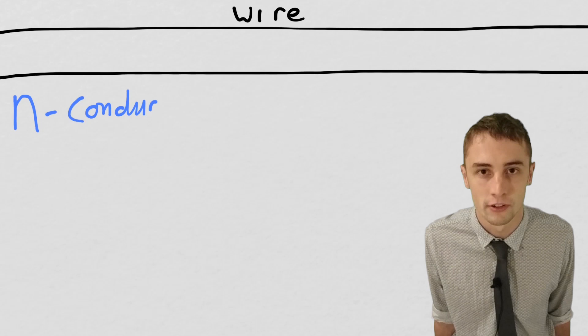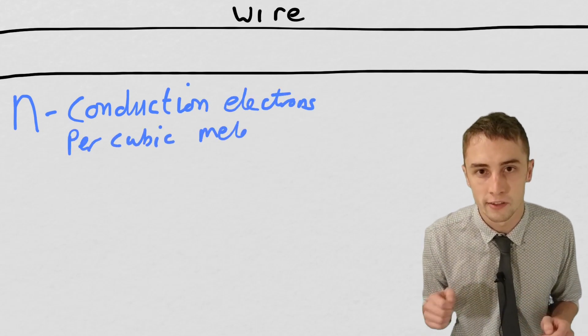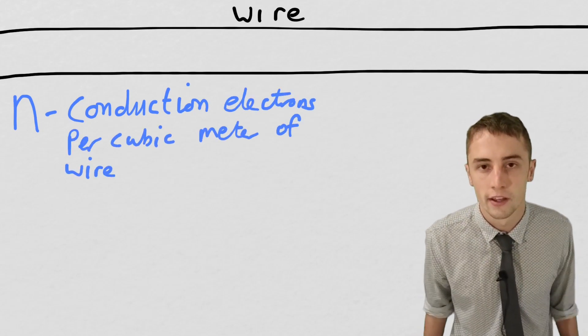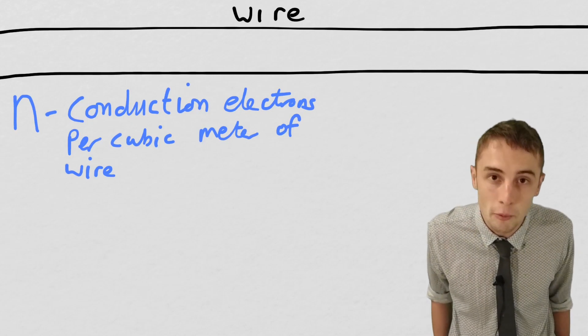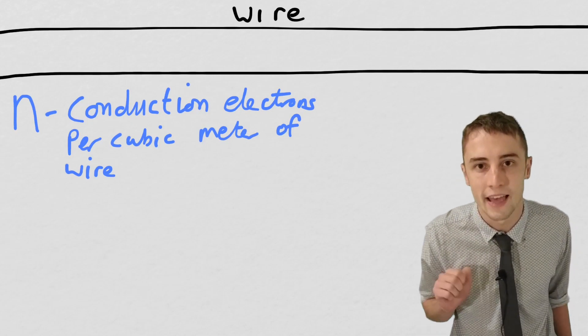It has an electron density. So this is only the electrons that are free to move. These are the conduction electrons. And we're going to define the number of these per cubic meter of wire as a lowercase n.